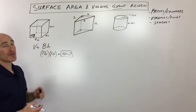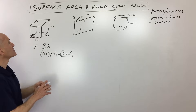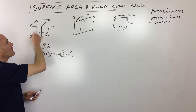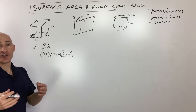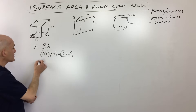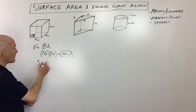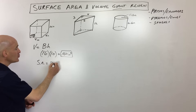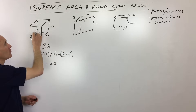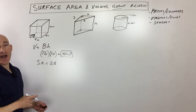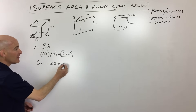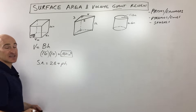Now let's talk about the surface area. The surface area is like if you were going to take a paintbrush and paint all the sides of this figure. The formula you want to memorize is 2B — capital B meaning the area of the base, two of them because you have a top and a bottom — plus the perimeter of the base times the height.